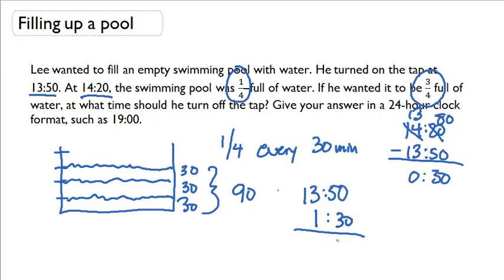I get 80. Well, 80 is greater than an hour, so I'm going to take 60 of those minutes and add it up to the hour section, and I get 20 minutes. And one plus one plus 13 is 15. So at 15:20, my pool will be three quarters full of water.